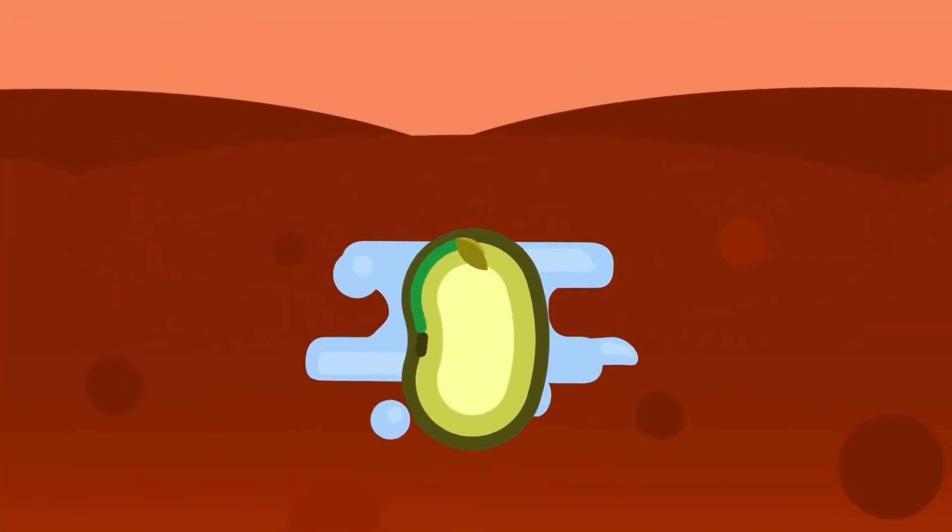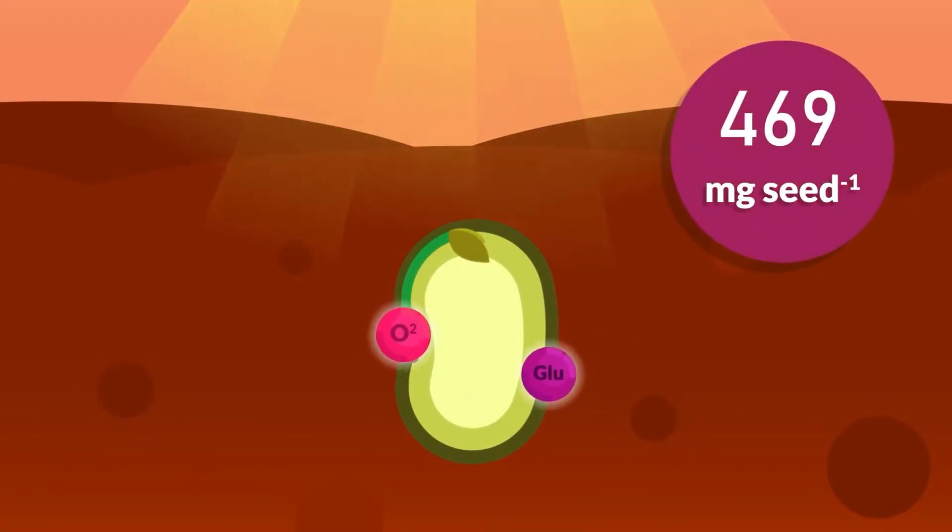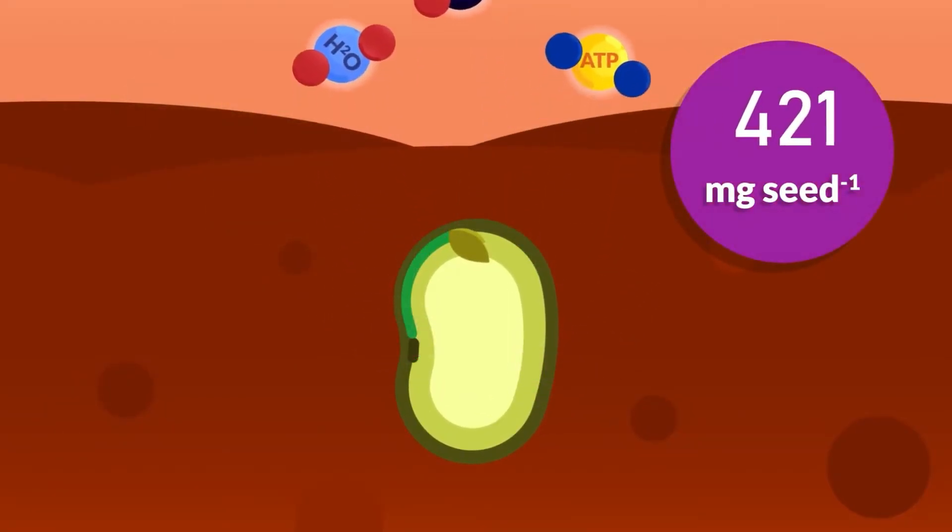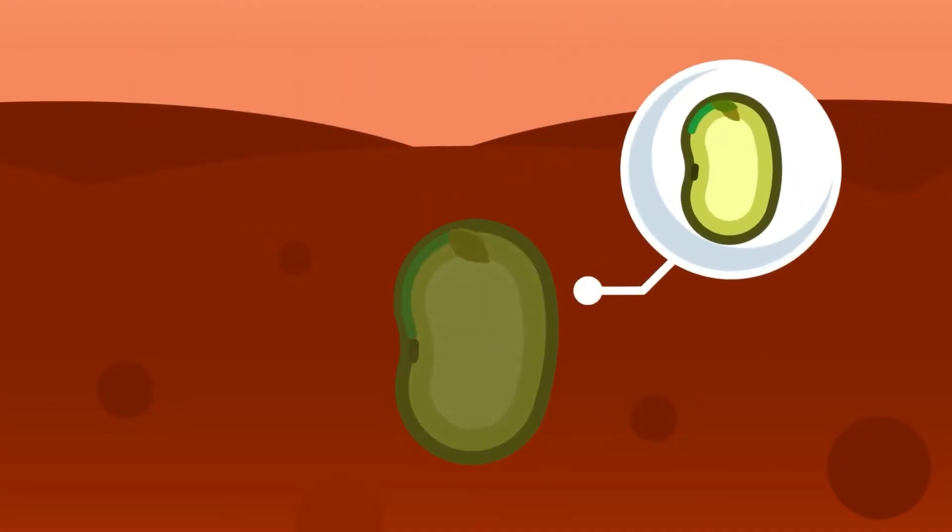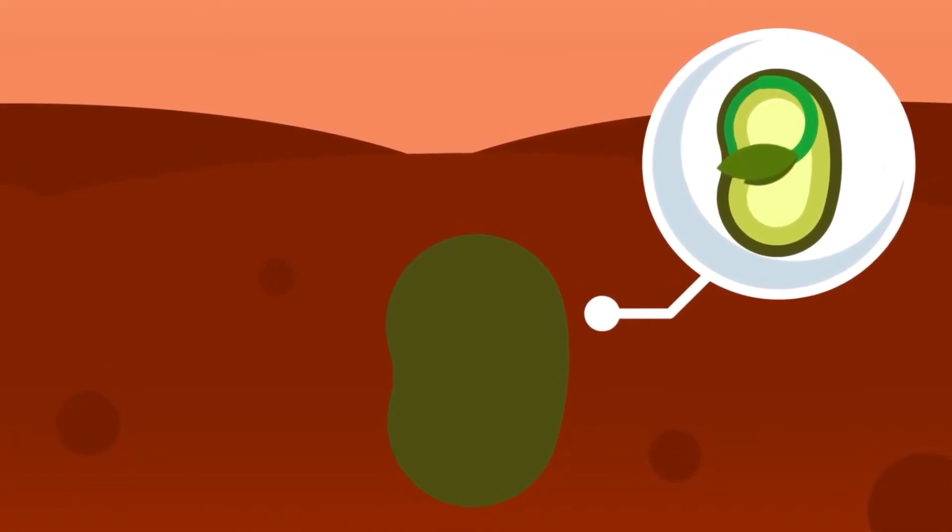Due to the absorption of water, the seeds increase in size, but its dry mass gradually decreases because of the active tissue respiration. These activities continue until the seedling can make its own food by the process of photosynthesis.